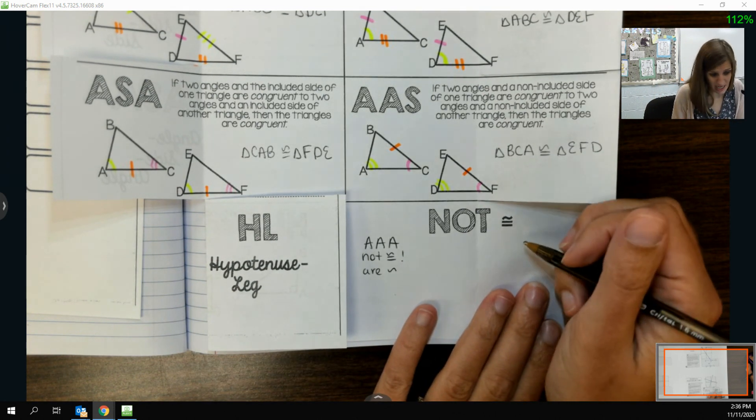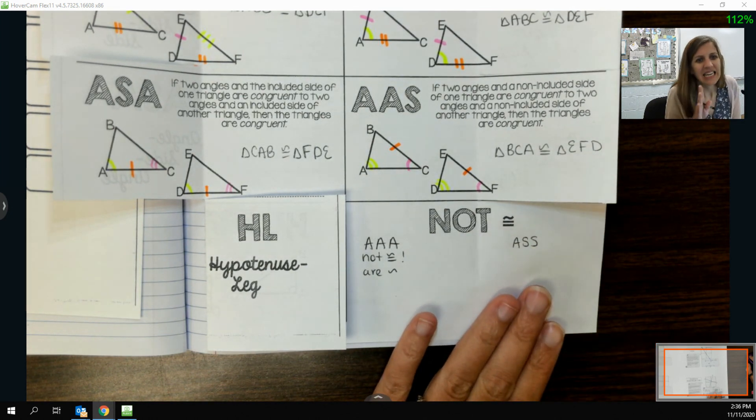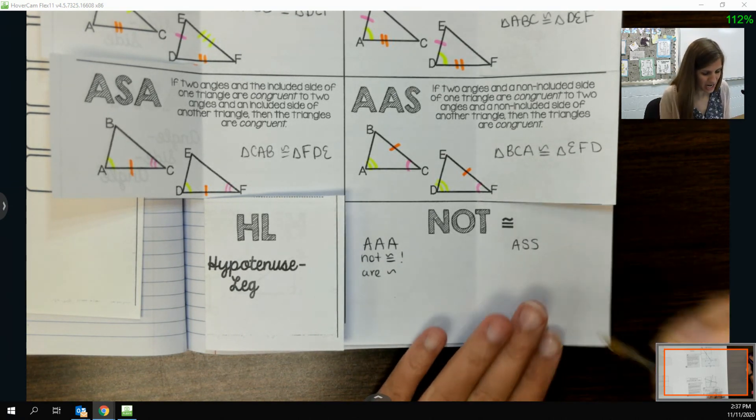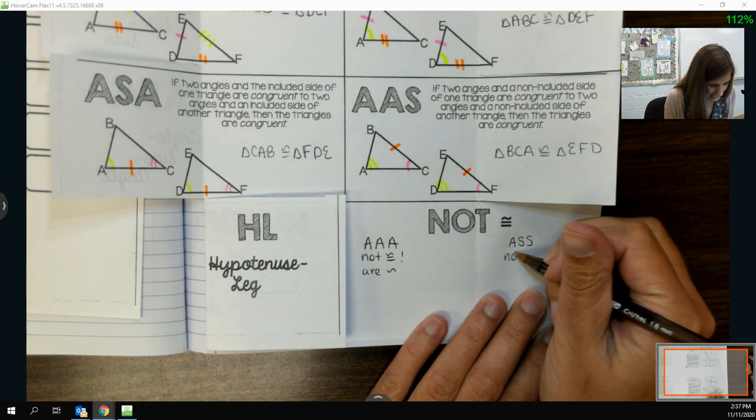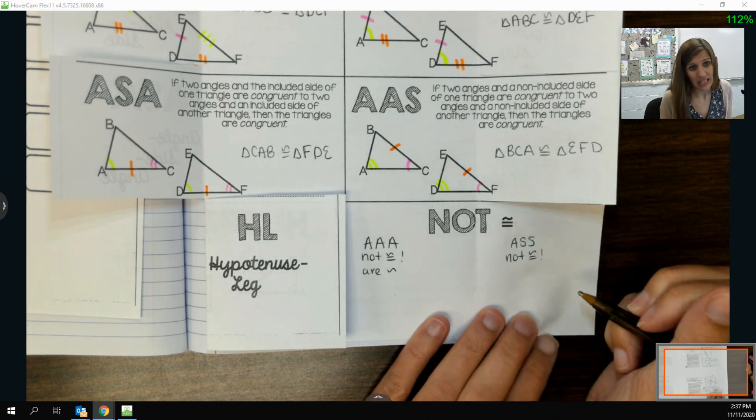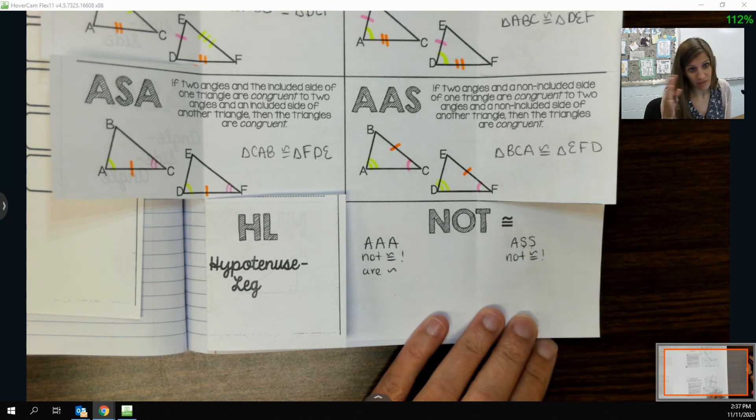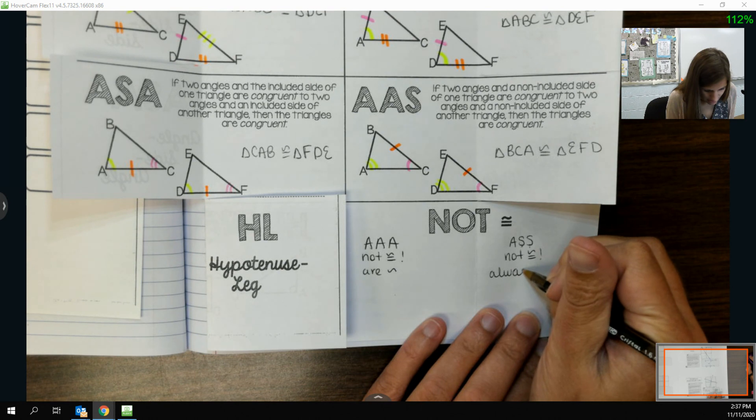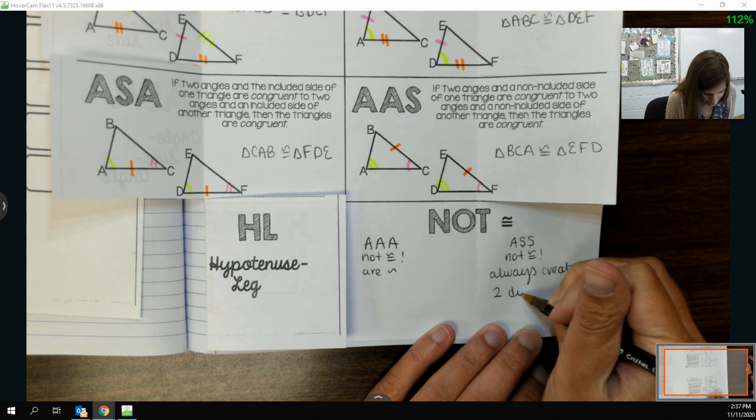The other one that was not enough information is the fun one. It's ASS. I don't want to say it too loud in case your parents are listening. Normally, we don't write it this way because naughty. But I mean, I don't care if we do. But they are not congruent. It's not enough information. They're also not similar. Basically, it's because this side that's connected to the other side here can kind of go willy-nilly, and so you can actually create two triangles always. So you can't know for sure which one you have. This always creates two different triangles.